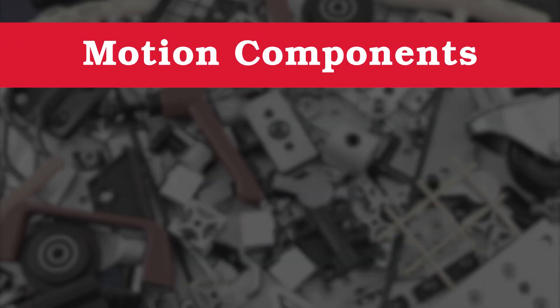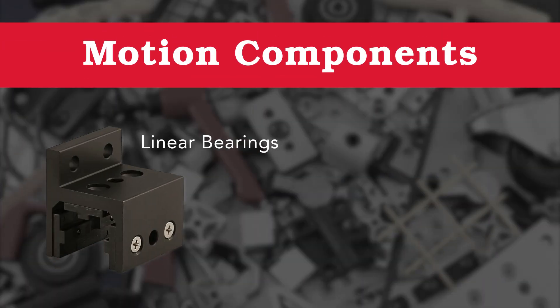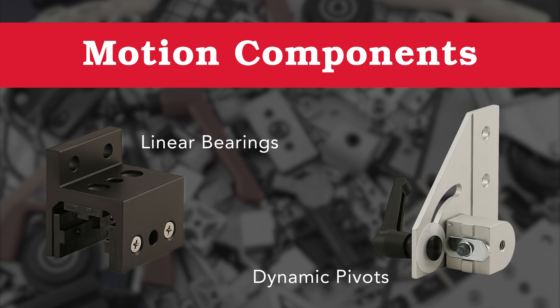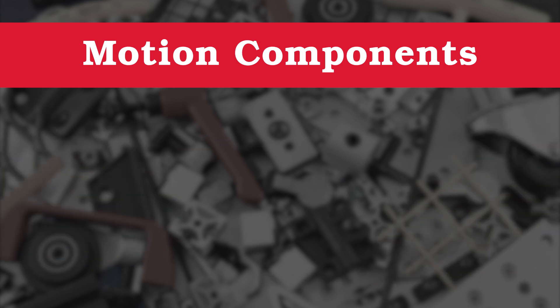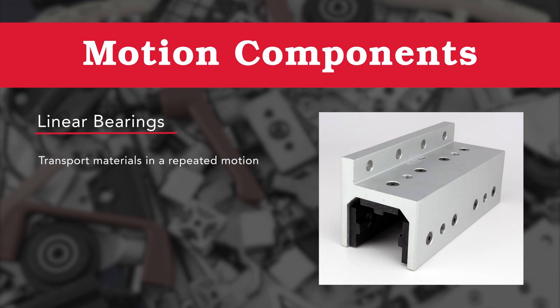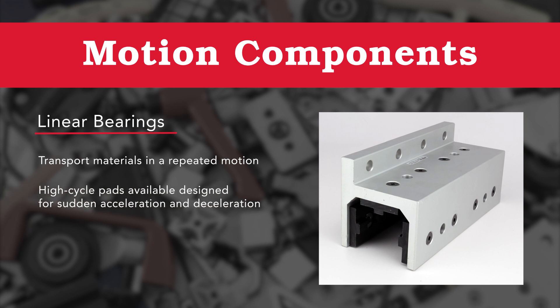There are two main types: linear bearings and dynamic pivots. Linear bearings are more commonly used for transporting materials in a repeated motion in an application. 8020 offers standard and high cycle pads for linear bearings.